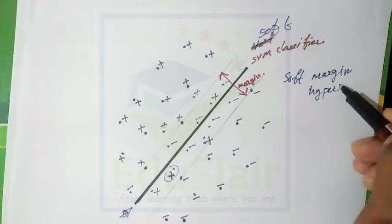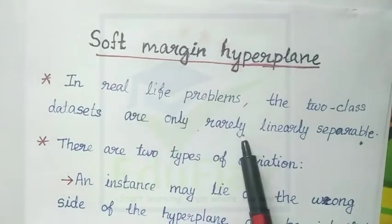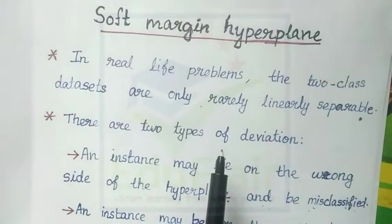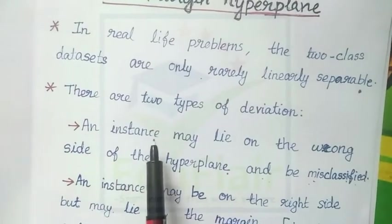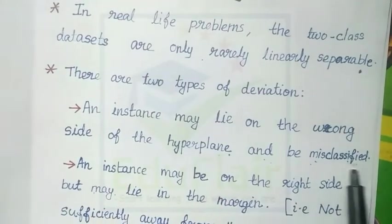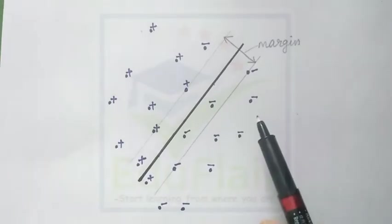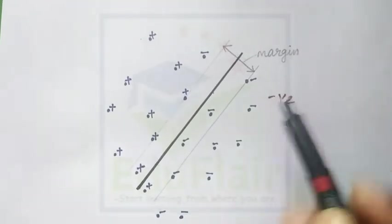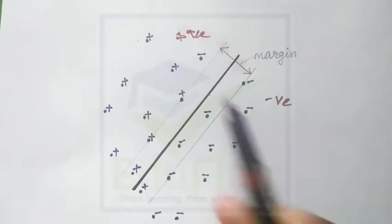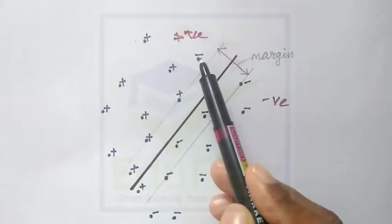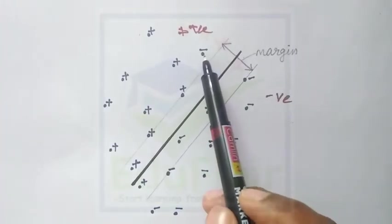In real-life problems, two-class datasets are only rarely linearly separable. There are two reasons for this. The first reason is that an instance may lie on the wrong side of the hyperplane and be misclassified. For example, here you can see some data points — these are negative samples and these are positive samples. We can find an instance that is a negative sample but is misclassified as a positive sample.